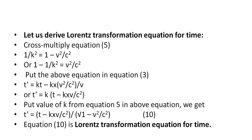Now let us derive the Lorentz transformation equation for time. Cross-multiplying equation 5 gives 1/k² equals 1 minus v²/c², so 1 minus 1/k² equals v²/c². Putting this into equation 3 for t', we get t' equals kt minus kxv/c². Substituting the value of k from equation 6, we get t' equals (t minus xv/c²) divided by the square root of (1 minus v²/c²). Equation 10 is the Lorentz transformation equation for time.